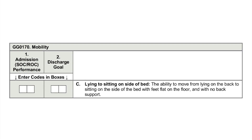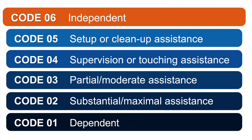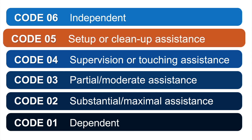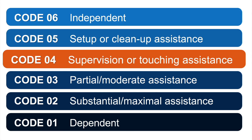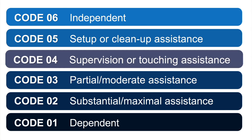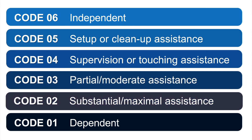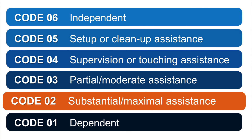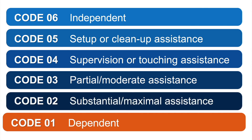How would you code Mrs. Brown's admission or start of care performance for GG0170C lying to sitting on side of bed? Code 06, independent. Code 05, set up or clean up assistance. Code 04, supervision or touching assistance. Code 03, partial, moderate assistance. Code 02, substantial, maximal assistance. Code 01, dependent.